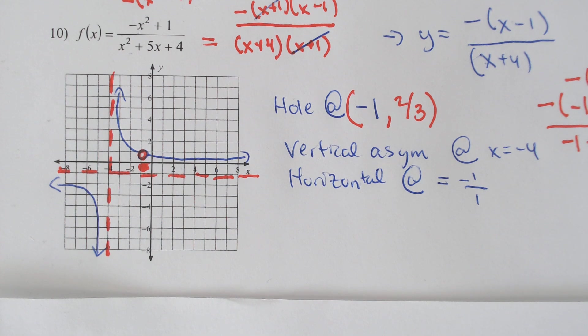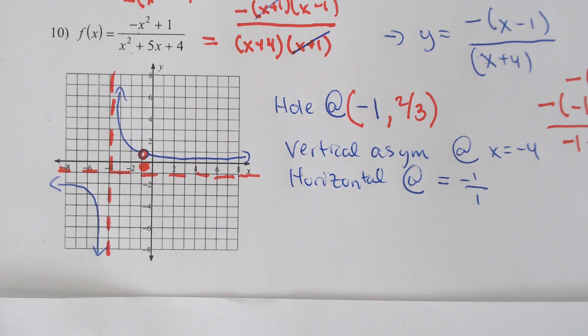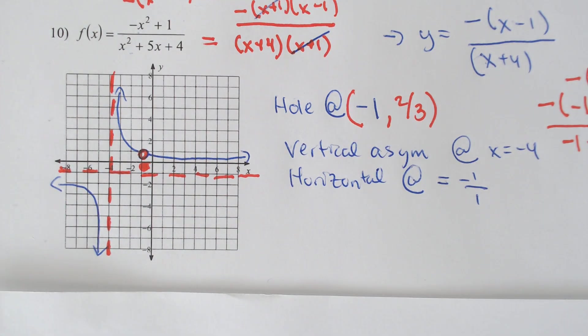Now if you graph these on a graphing calculator, the hole doesn't show up because it's so small that you just literally don't see it. So that is where graphing calculators will fail you, because your graph would look like this but the hole will look filled in. It looks like a smooth graph on a graphing calculator.